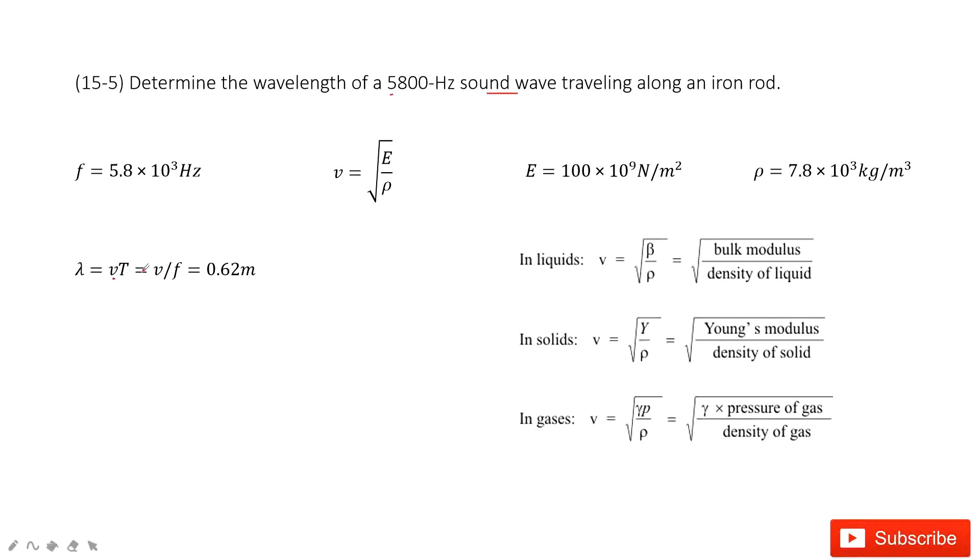So the next question looks like we need to find the speed of the wave. How can we find the speed of the wave there? It tells us this wave traveled along the iron rod using the materials.